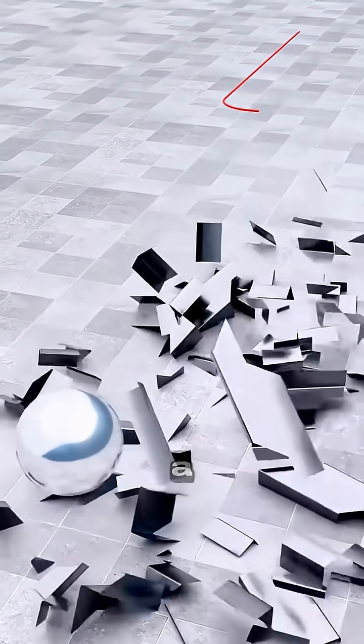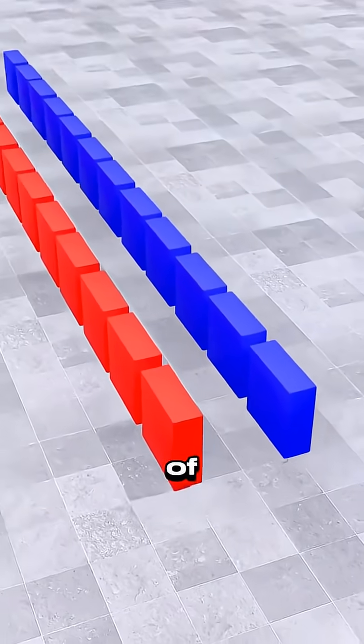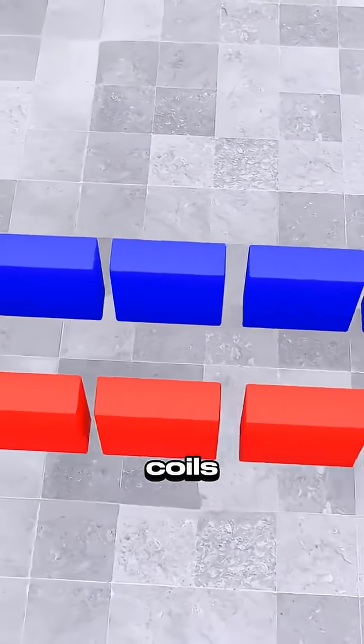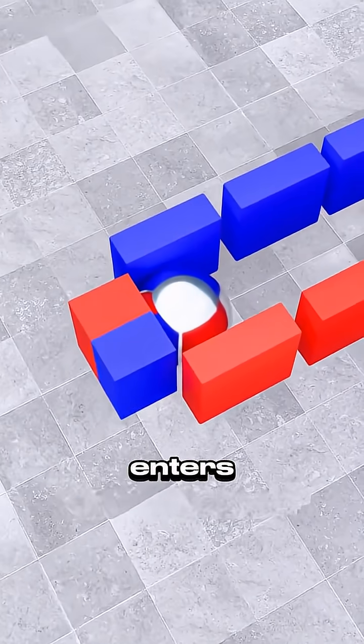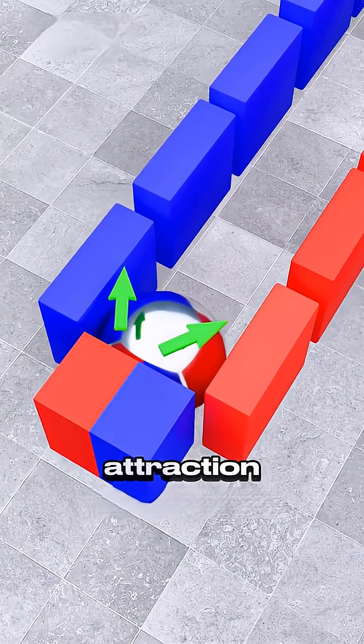So you design a more elegant system. Replace the rails with a series of independent electromagnetic coils. As the projectile enters, the first coil activates, pulling it in with magnetic attraction.